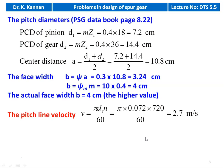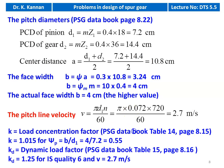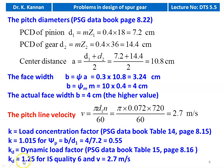Now we verify — check the design using compressive stress and bending stress. Load concentration factor K from table 14, page 8.15: ψP = B/D1 = 4/7.2 = 0.55; for ψP = 0.55, K = 1.015. Dynamic load factor Kd from page 8.16, for IS quality 6 with pitch line velocity 2.7 m/s: Kd = 1.25.